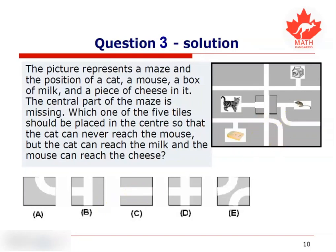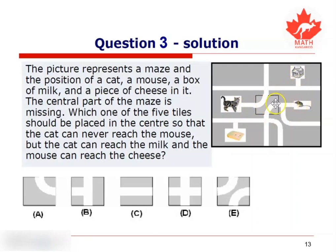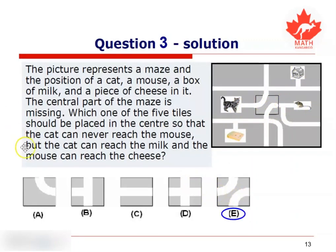Now let's try the third tile. When the third tile is placed in the center of the maze, notice that the cat is now able to reach the mouse. We do not want the mouse to be eaten by the cat, so obviously the third tile is also not what we are looking for. Let's try the fourth tile. When the fourth tile is placed in the center of the maze, notice that the cat is still able to reach the mouse, so the fourth tile is also not what we are looking for. When the fifth tile is placed in the center of the maze, the cat is able to reach the milk, and the cat is able to reach the cheese. So this is the tile that we are looking for, and therefore our answer is E.